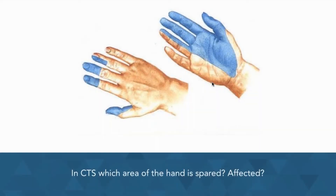Hello and welcome to PT Exam Prep Study Topics. Today we're going to be talking about carpal tunnel syndrome and how the hand is affected. I want to bring your attention to this picture — this picture is correct when we look at the hand's innervation from the median nerve, however it is incorrect when we're looking at carpal tunnel syndrome.